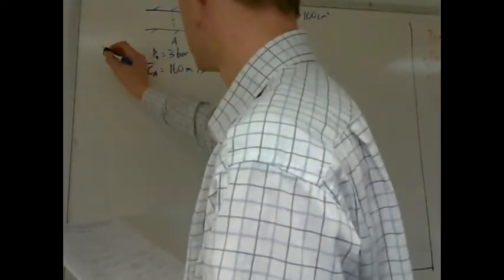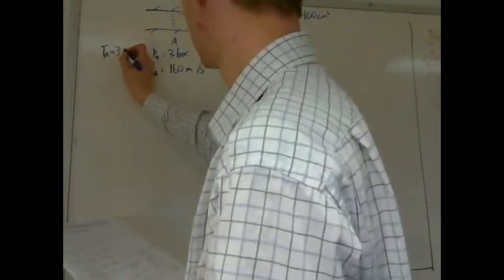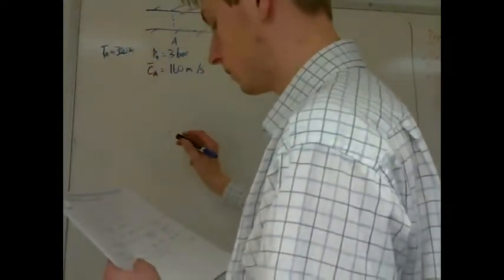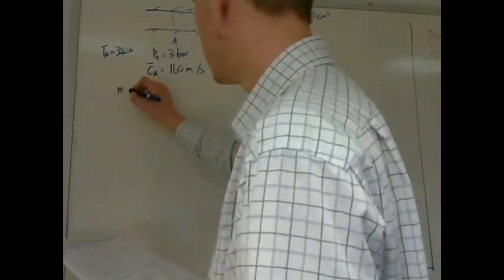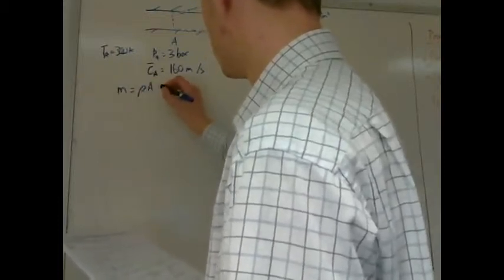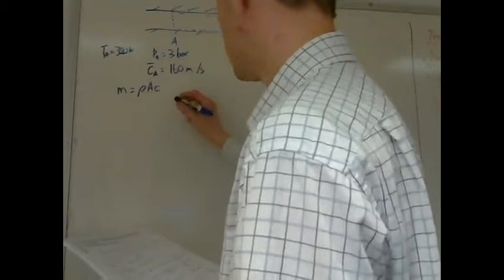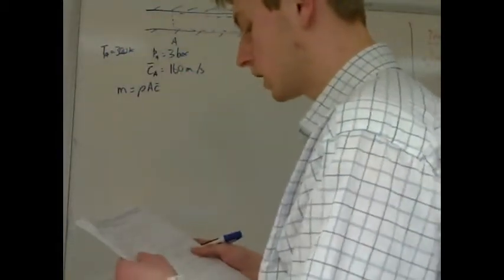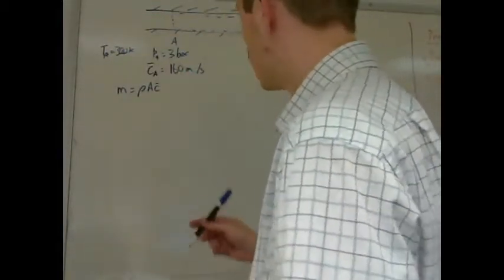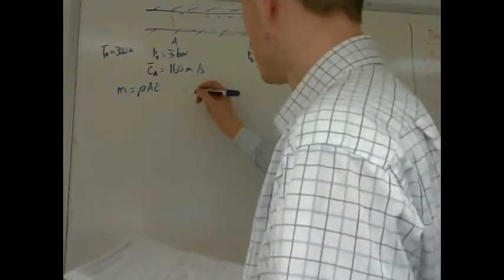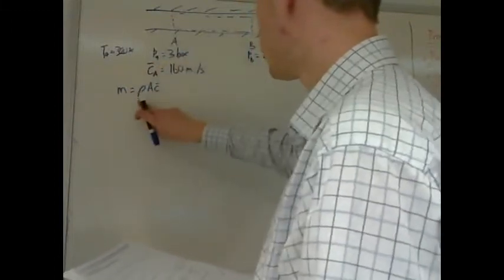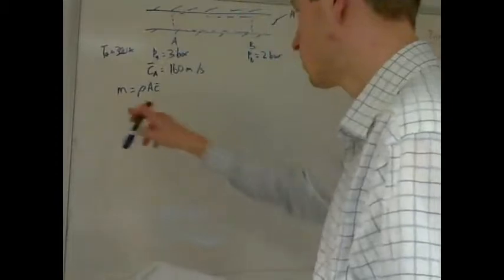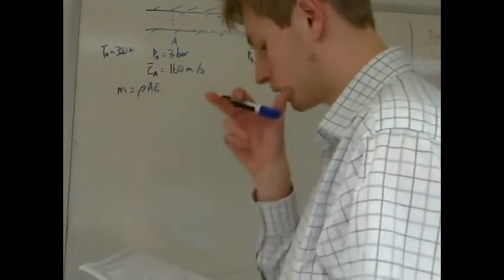The temperature at A is 300 Kelvin. The statement of mass continuity is that the mass flow rate is equal to rho times A times C-bar at any location. At point A and point B, both rho and C will be different, but the values of area A and mass flow rate ṁ are the same.